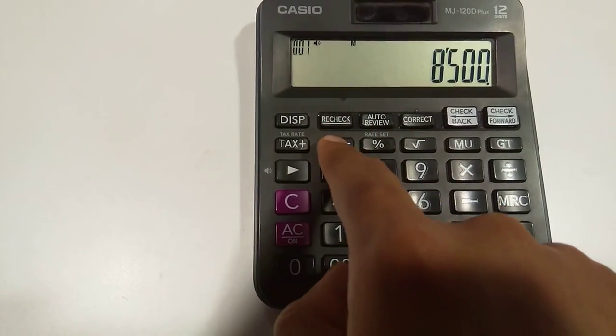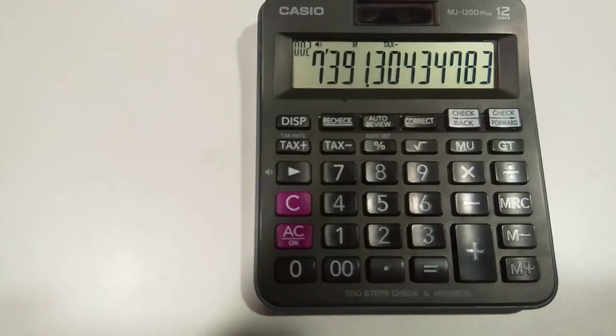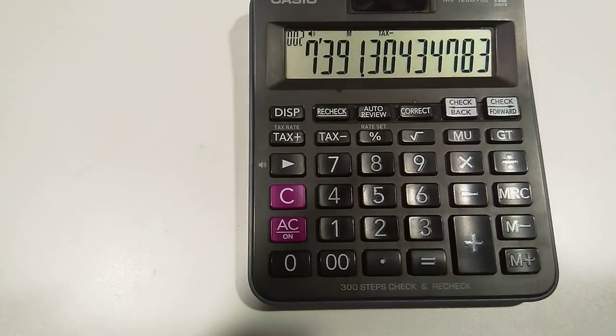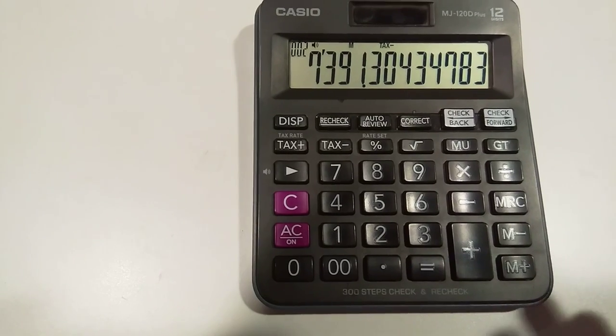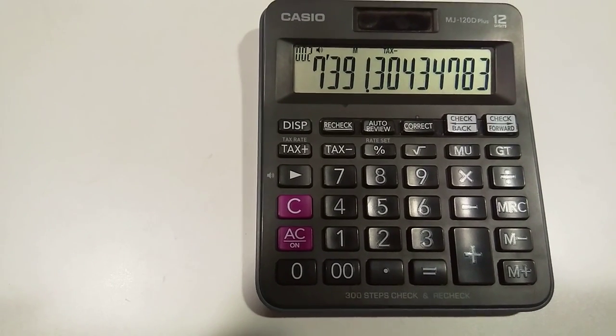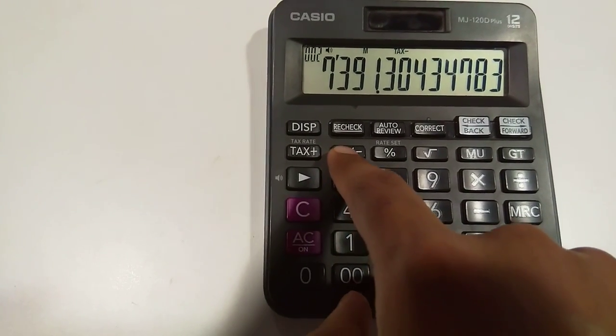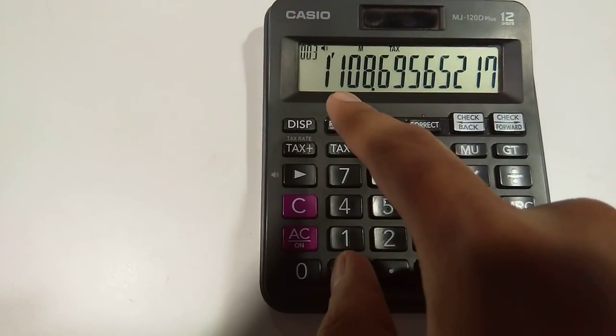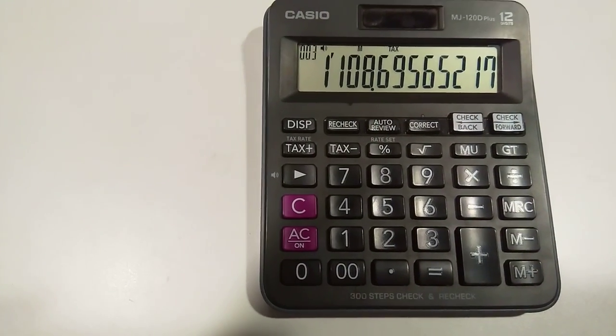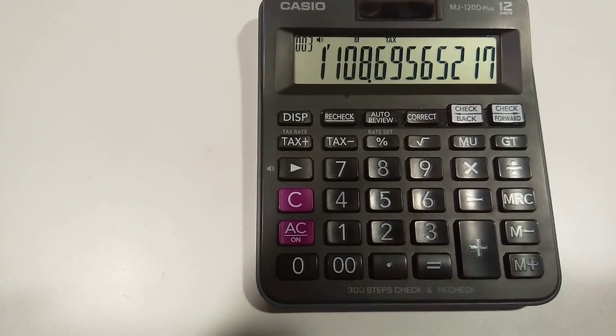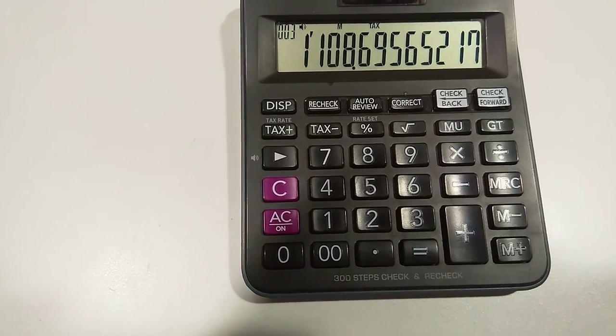So what you have to do, you just press tax minus button. 7391 is the cost value of that product. And you want to know how much is the tax, again press this tax minus button. So 1108 is the total amount of tax you have to pay on a product that is worth 8500.